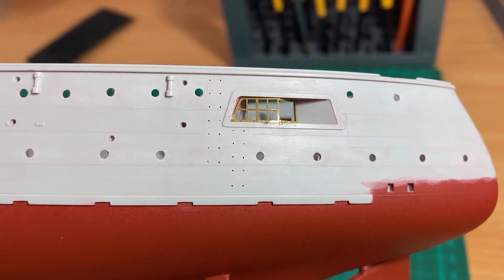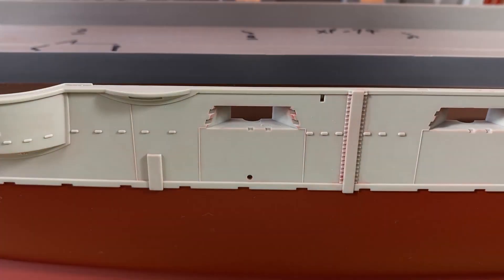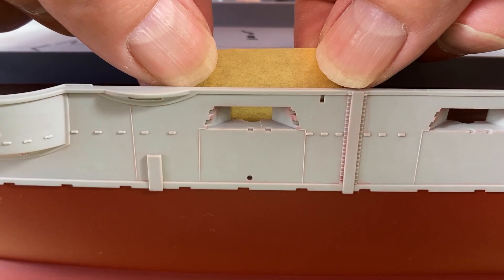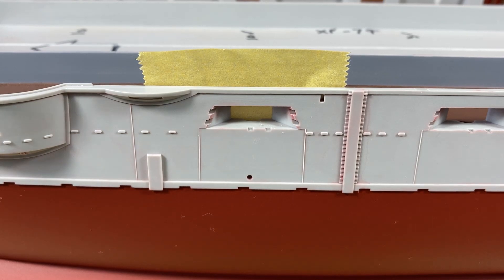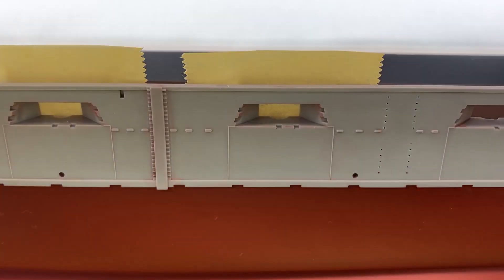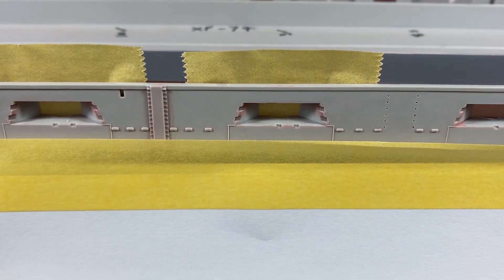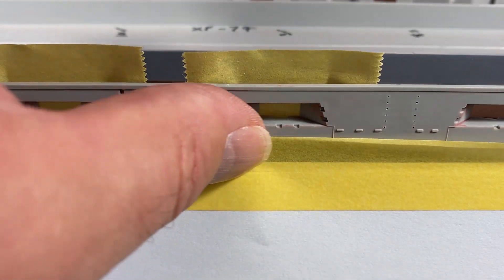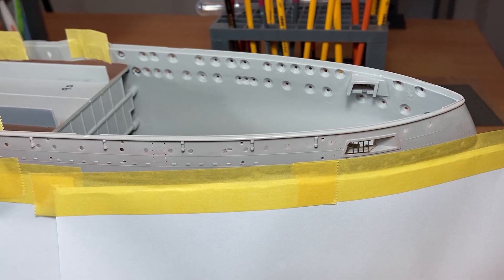Before we start priming and painting, I'll just mask off behind the gun ports. That'll stop the overspray going through onto the deck. I don't think it matters—you won't be able to see very much here. Then just to protect the red paint, we'll put in some masking here as well.